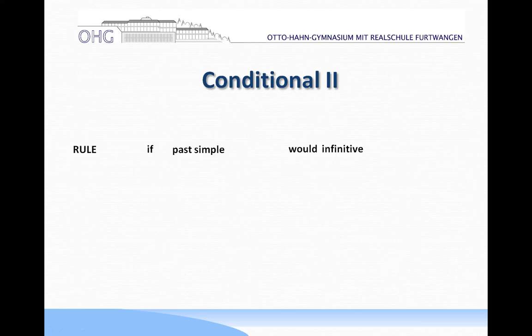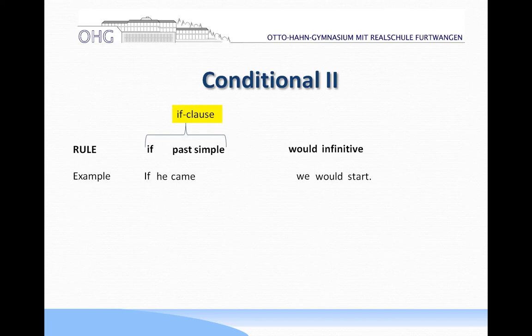The rule for the conditional two works like this: in one part you have 'if' plus past simple, and in the second part you have 'would' plus infinitive. So an example is 'if he came, we would start.' You can see the if clause first, then the main clause — 'if' and past simple in the if clause, and 'would' and an infinitive, in this case 'start,' in the main clause.